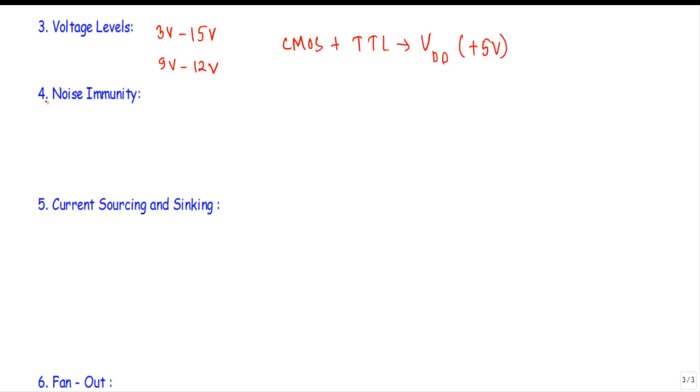The next point is noise immunity. The CMOS logic family has the highest noise margin among all the logic families and it depends on the operating supply voltage VDD. The noise margin of the CMOS logic family is typically 45% of the operating supply voltage VDD. For a supply voltage of plus 5 volt, the noise immunity or noise margin of the CMOS circuits are around 2.25 volt.